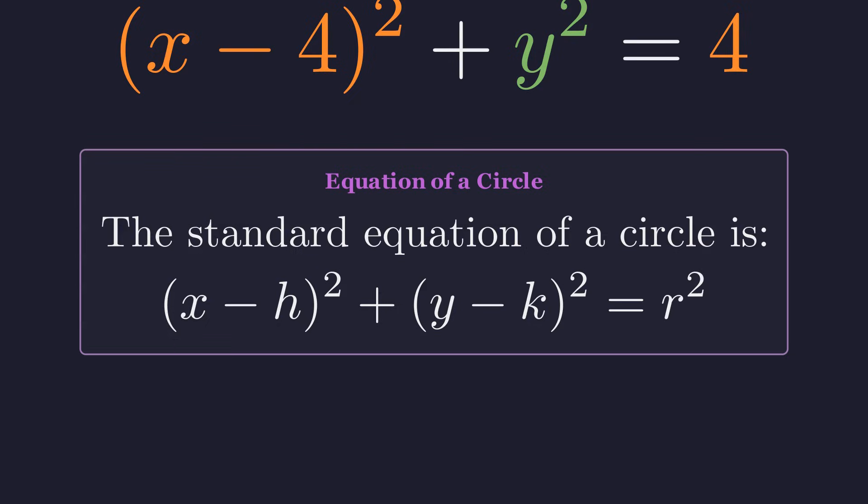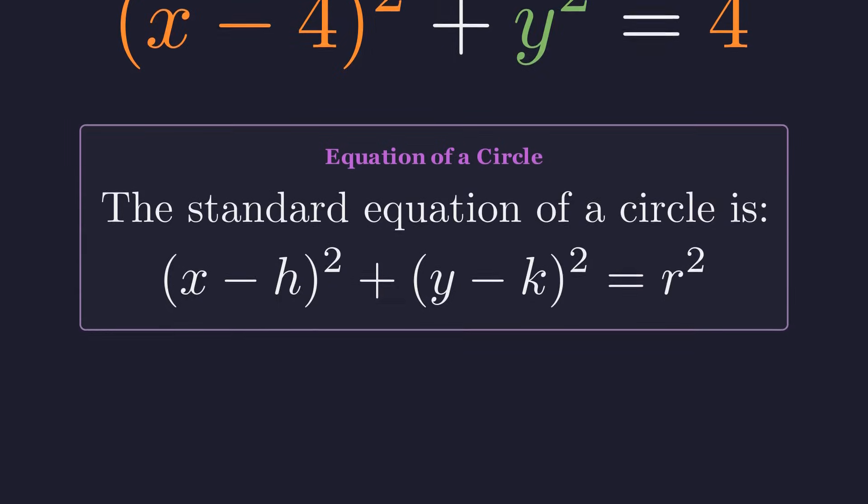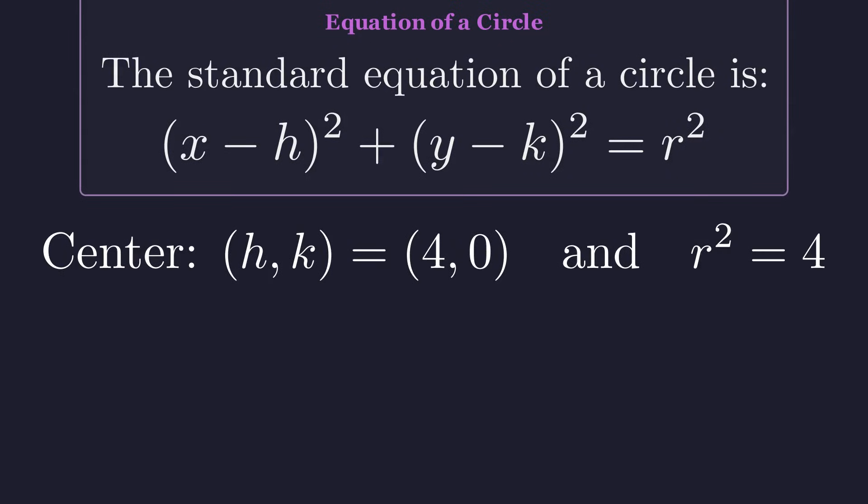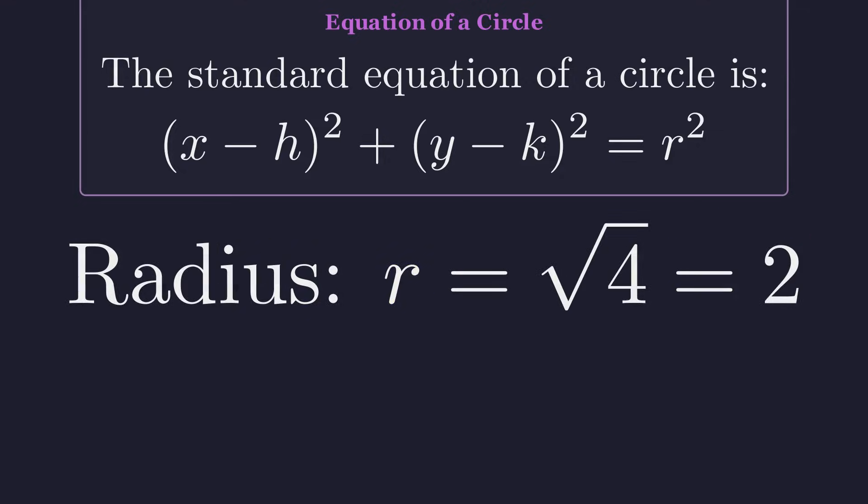The h value is 4, k is 0, and r squared is 4. This tells us our equation describes a circle centered at the point 4 comma 0 with its radius squared equal to 4. Taking the square root gives us the radius. The radius r is therefore 2.